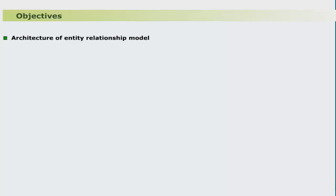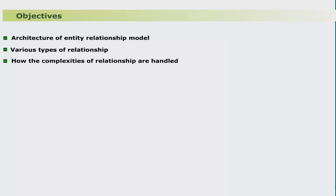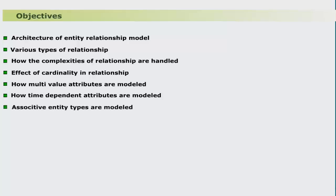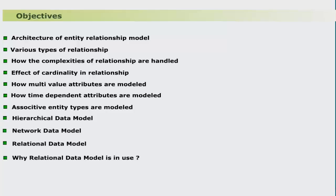The objectives of the unit are to understand: the architecture of the entity relationship model, various types of relationships, how the complexities of relationships are handled, the effect of cardinality in relationships, how multi-valued attributes are modeled, how time-dependent attributes are modeled, how associative entity types are modeled, the hierarchical data model, network data model, relational data model, why the relational data model is in use, and the basics of database design.